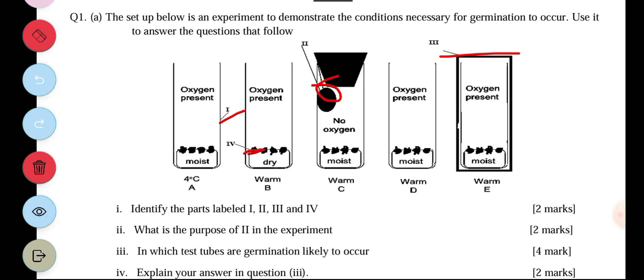And the third part is: in which test tube is germination likely to occur? The test tubes that germination are likely to occur are A and then D. Because moisture is present, oxygen is present, and then warmth is present. So explain your answer in the question.